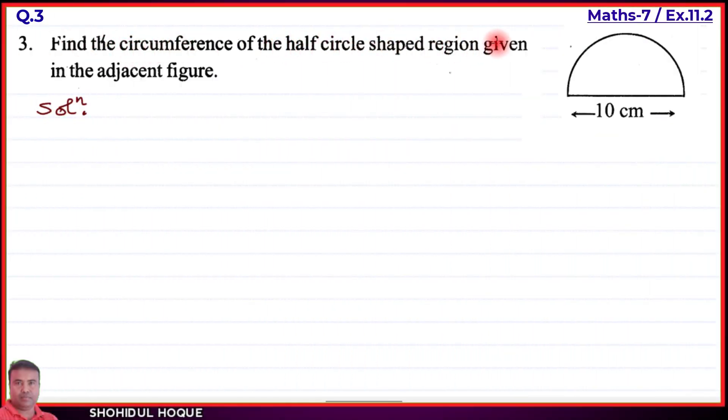Question number 3: Find the circumference of the half circle shaped region given in the adjacent figure. This is a semicircle region. The diameter is given as 10 centimeters. Since diameter is given, the radius equals 10 by 2, which is 5 centimeters.